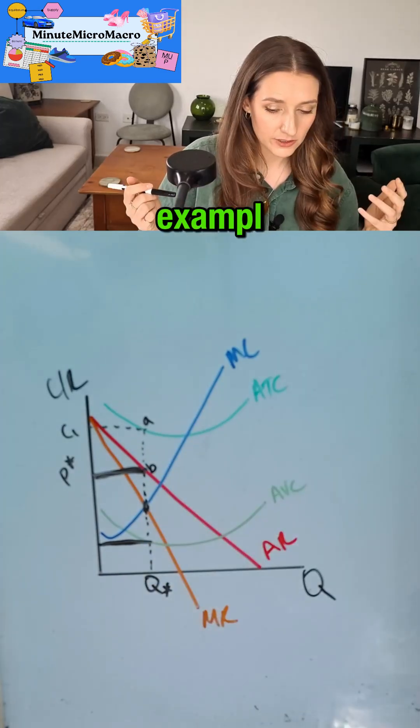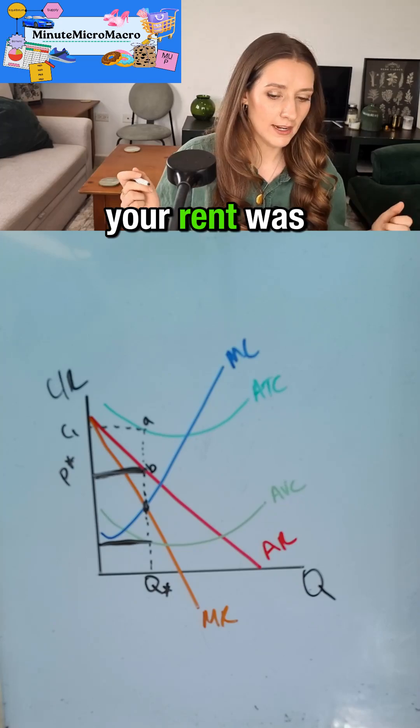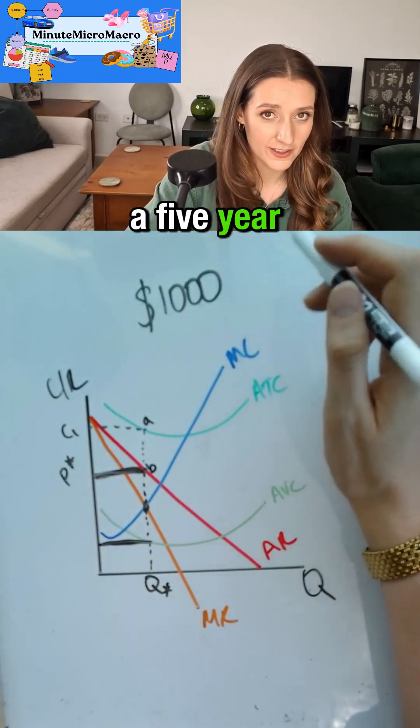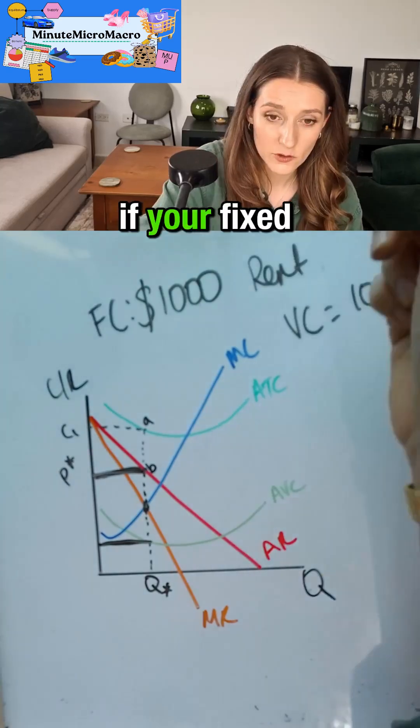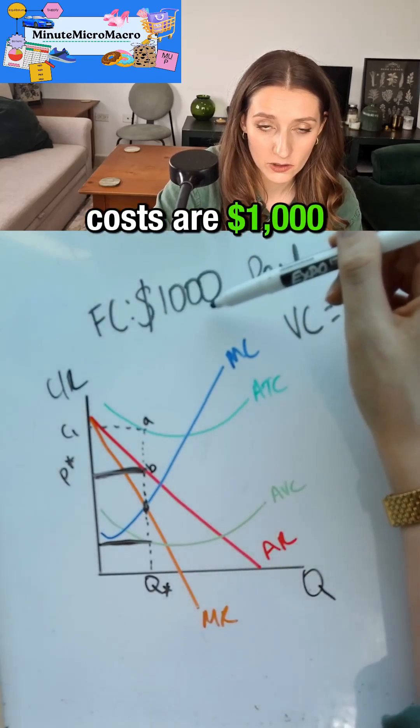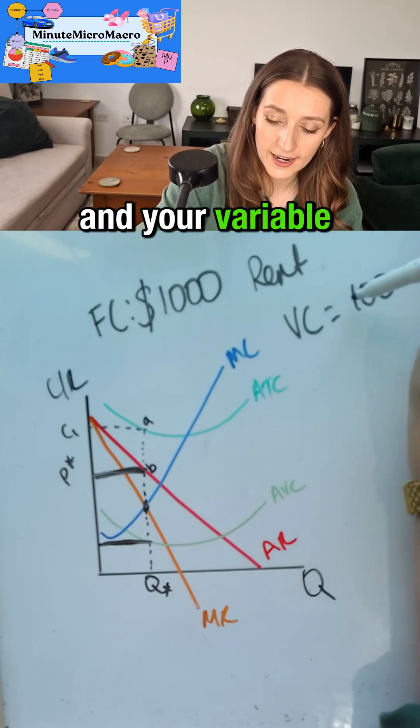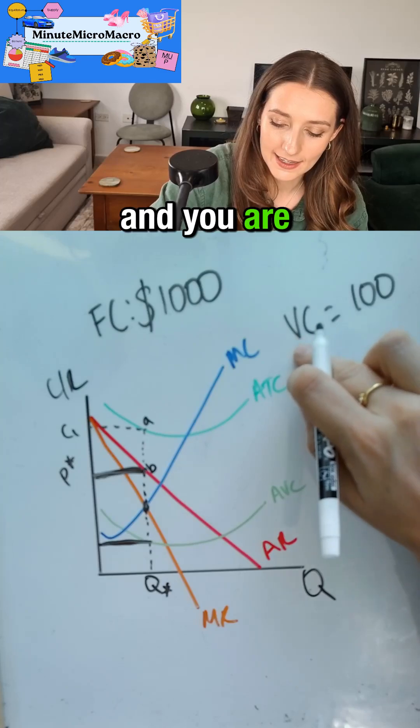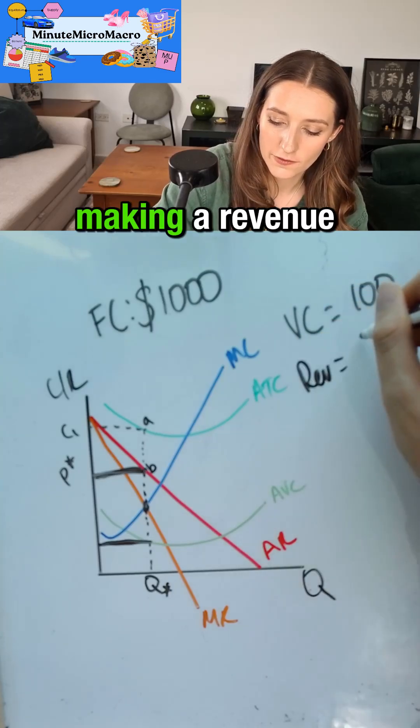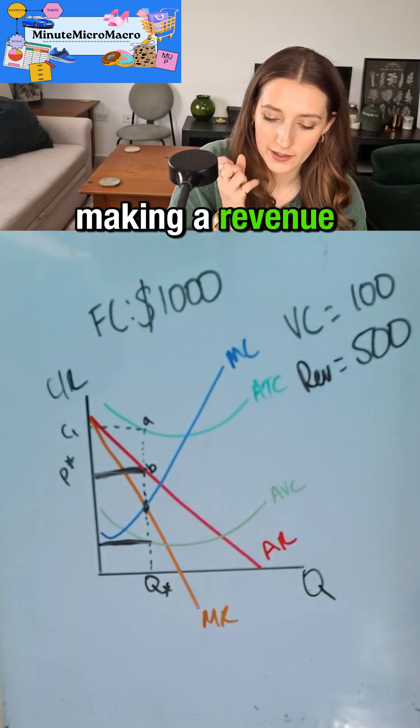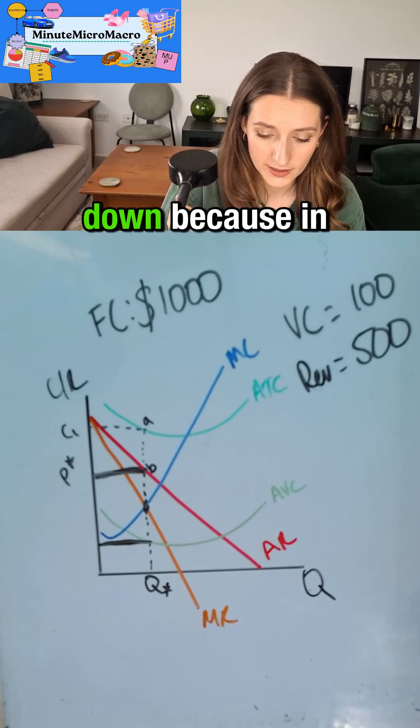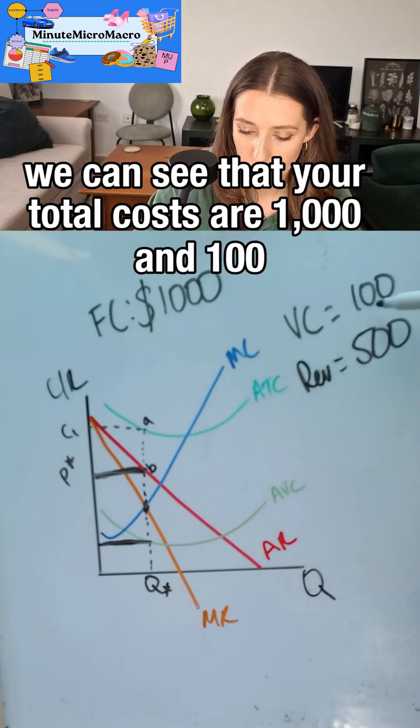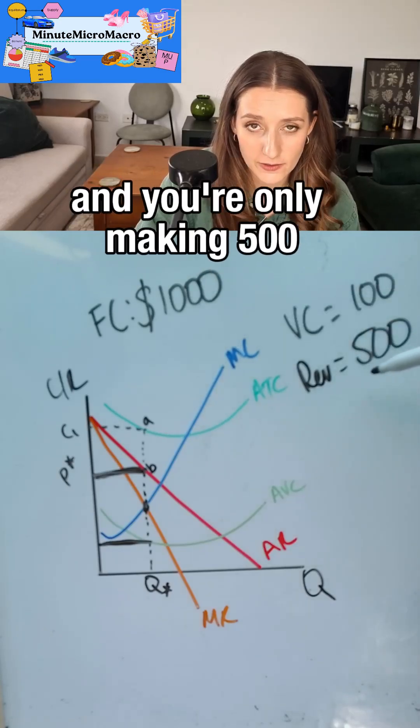If, say for example, your rent was a thousand dollars a week and you've signed a five-year contract because you're in business. If your fixed costs are a thousand dollars a week and that's your rent and your variable costs are only a hundred dollars a week and you are making a revenue of five hundred dollars a week. Obviously in the long run you should shut down because in the long run you're making a loss. You can see that the total costs are one thousand and one hundred and you're only making five hundred.